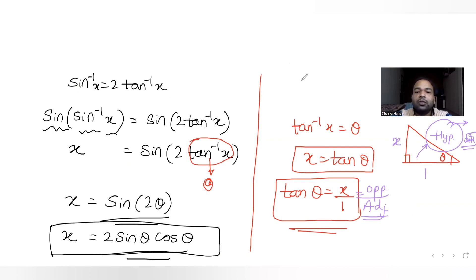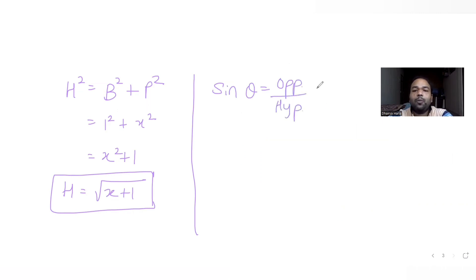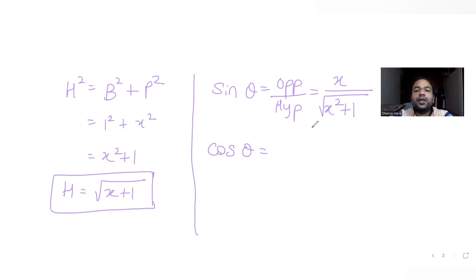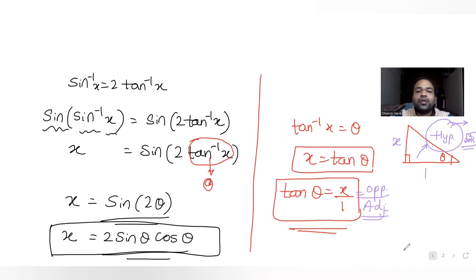From the right triangle, sinθ = opposite/hypotenuse = x/√(x²+1), and cosθ = adjacent/hypotenuse = 1/√(x²+1). Substituting these into x = 2sinθcosθ gives x = 2 · (x/√(x²+1)) · (1/√(x²+1)).